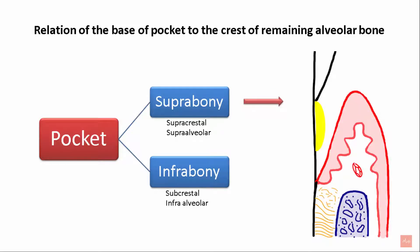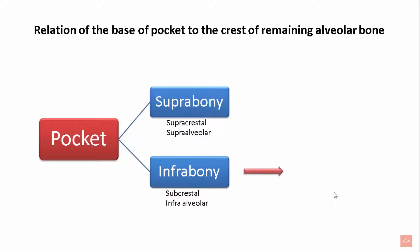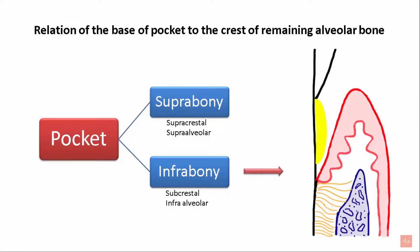Suprabony pockets are also called supraalveolar. In suprabony pockets, the base of the pocket is coronal to the level of the remaining alveolar bone. In the case of infrabony pockets, which are also called subcrestal or infraalveolar pockets, the base of the pocket lies apical to the crest of the alveolar bone. So in infrabony pockets, the lateral wall of the pocket lies between the tooth surface and the crest of the alveolar bone.